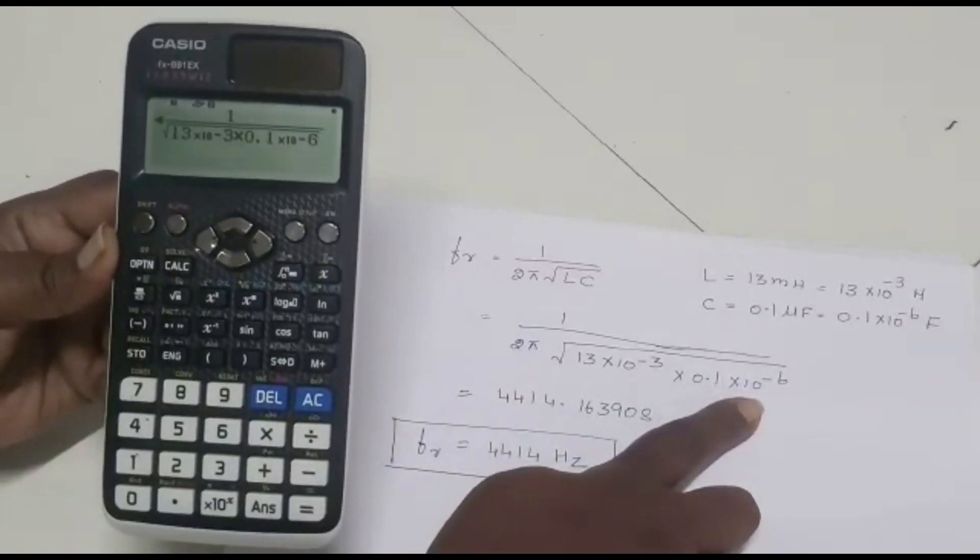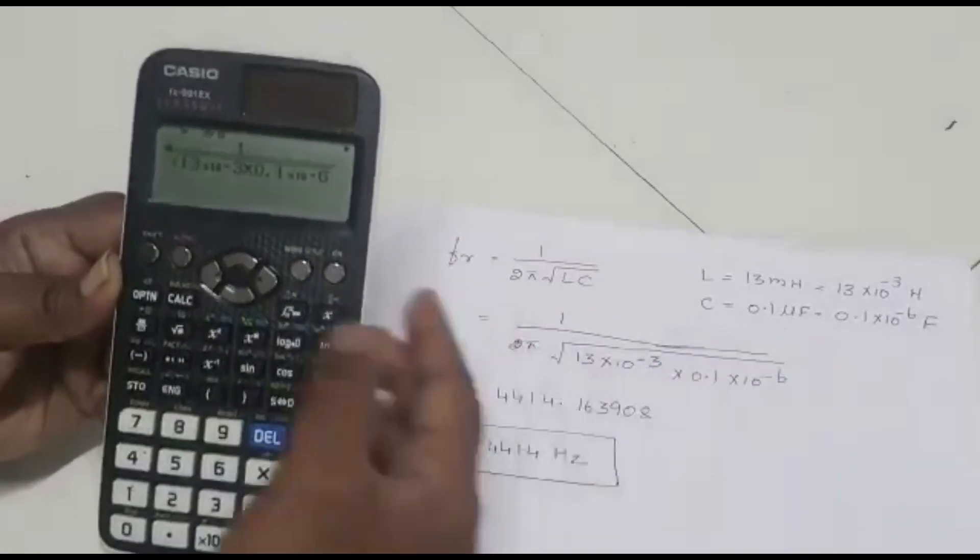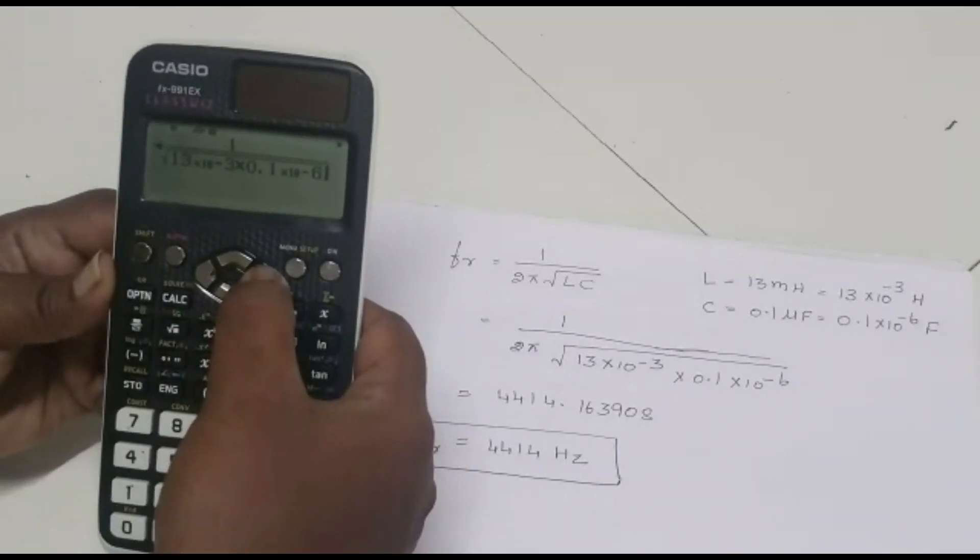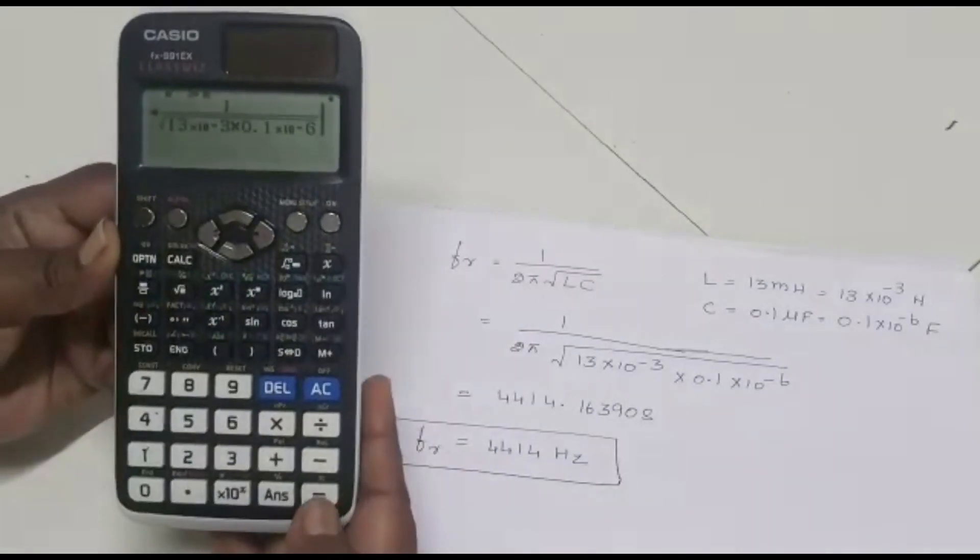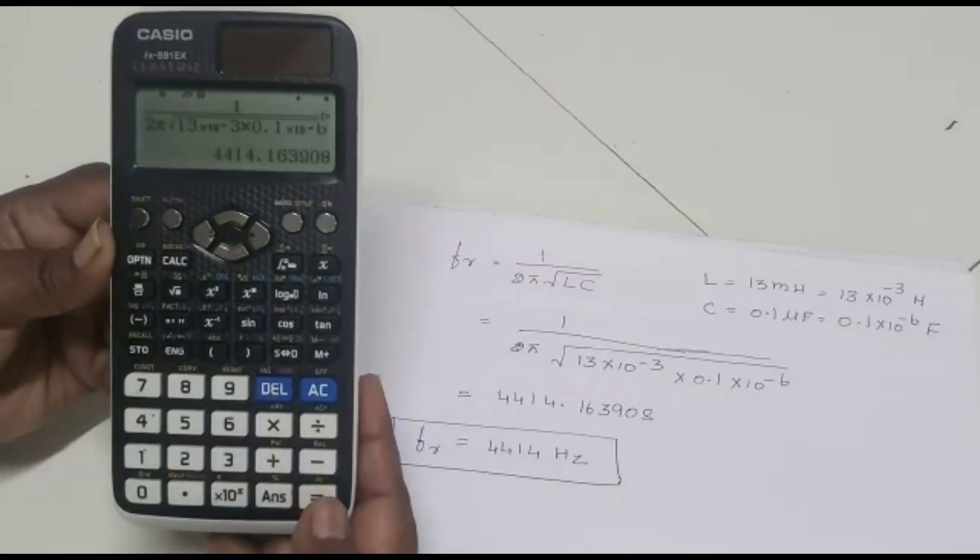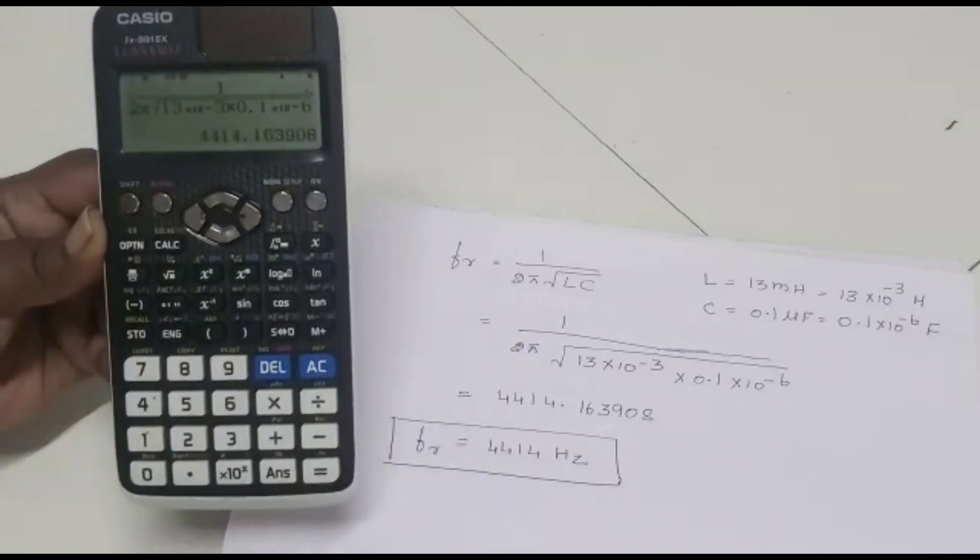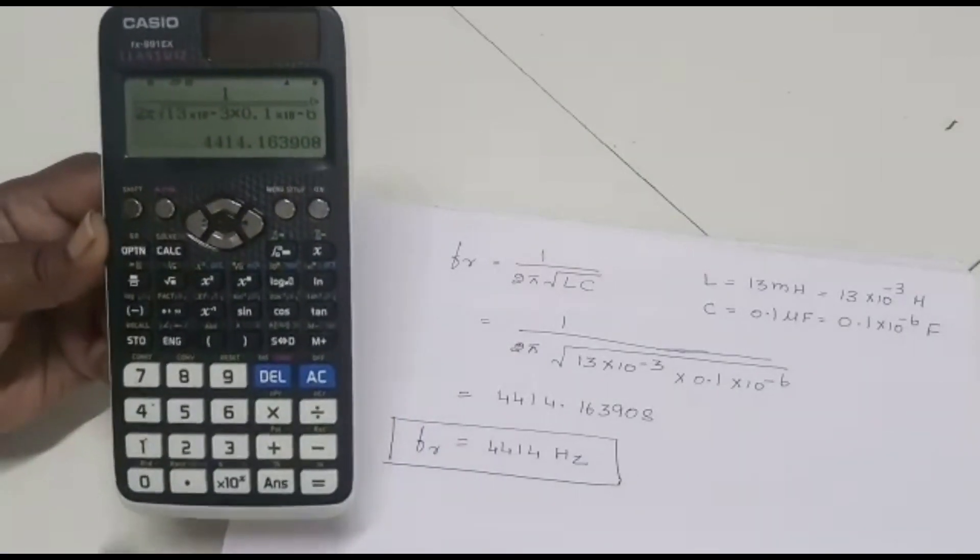Now, we are in the down part only. We should go to the center. Press this right button. We should move towards right side. Once again, press it. Now it is coming to the center part. At this time, press equal to. It is showing the value 4,440 point sum value.